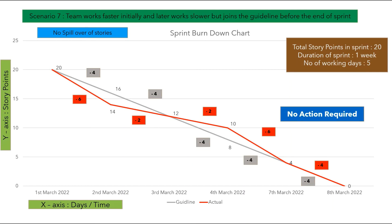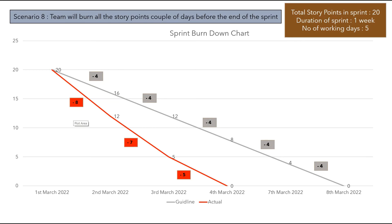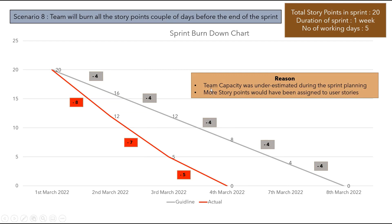In another scenario, the team completes all 20 story points two days before the end of the sprint. Day 1: 8 points; day 2: 7 points; day 3: 5 points — remaining story points reach 0 by day 3. Since the team cannot sit idle, they may take extra user stories from the backlog, but this is not the right approach. The reason could be that team capacity was underestimated during sprint planning, or too many story points were assigned. Action is required to resolve this in upcoming sprints.